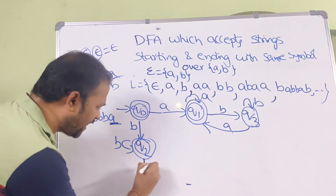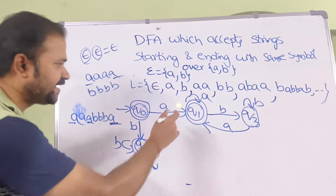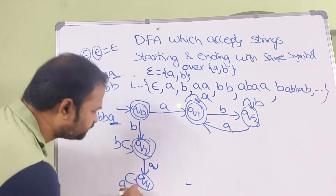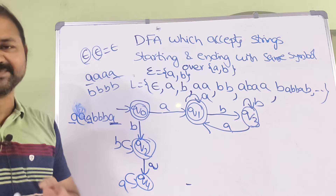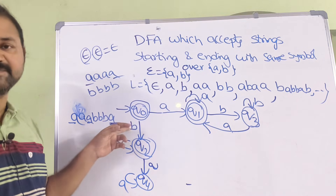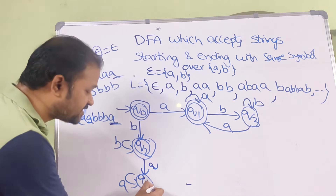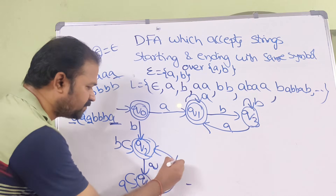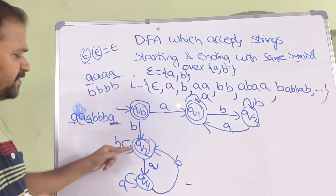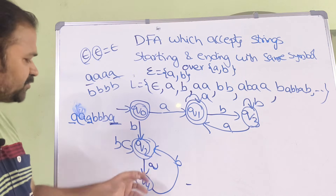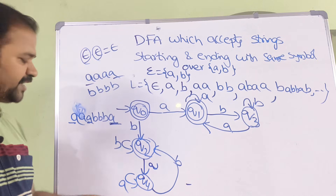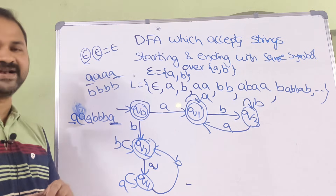Similarly, if we apply A on Q2 we go to a new non-final state Q4. Any number of A's on Q4 keep us in Q4, because the string started with B and must end with B. If we apply B on Q4 we move back to Q2, which is the final state.